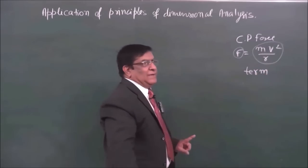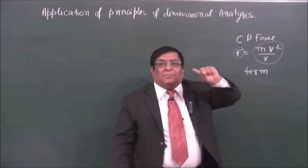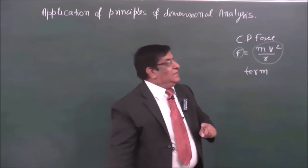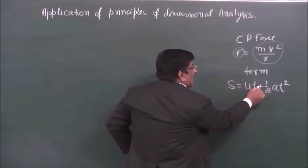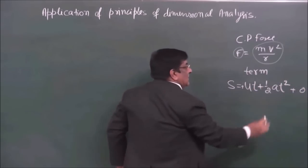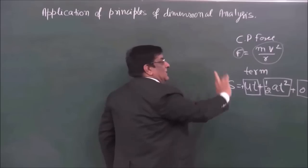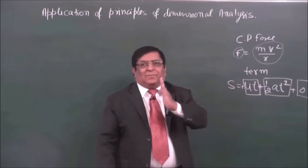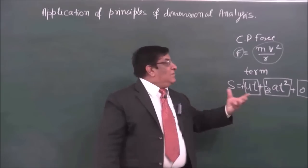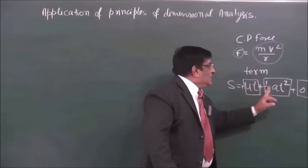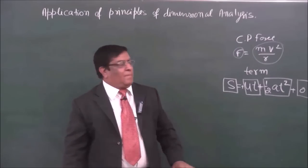When we multiply m with v, again multiply with v, and divide by r, this complete expression makes one term. For example, in s = ut + ½at², between each plus sign is one term. A term consists of quantities connected by multiplication or division.